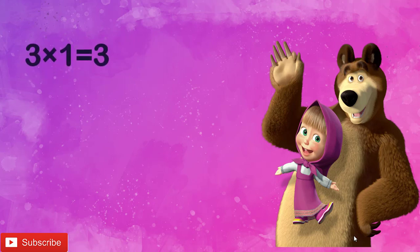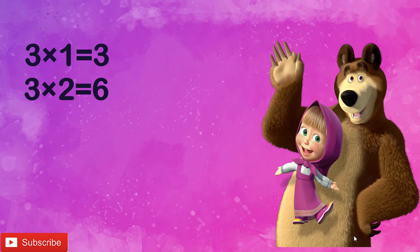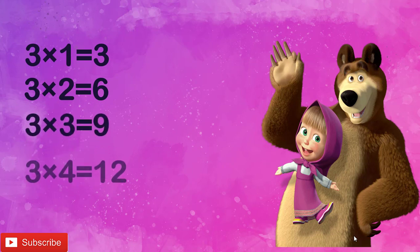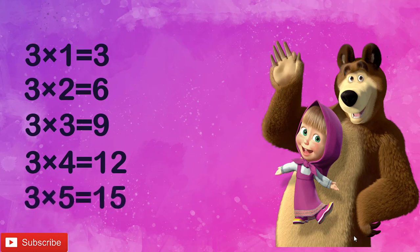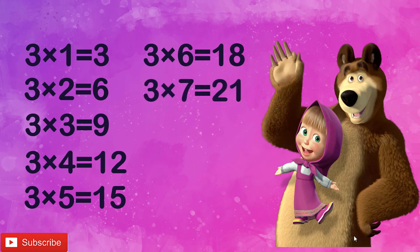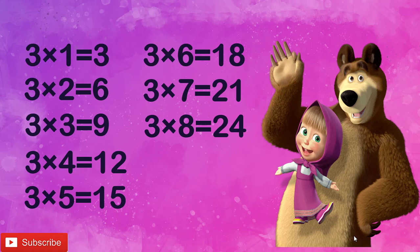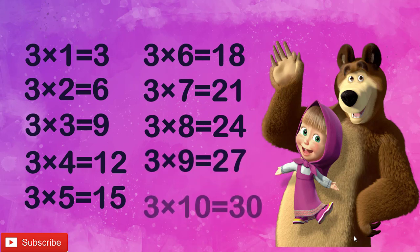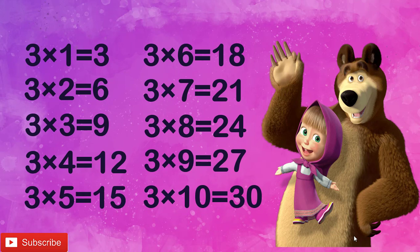3 1's are 3, 3 2's are 6, 3 3's are 9, 3 4's are 12, 3 5's are 15, 3 6's are 18, 3 7's are 21, 3 8's are 24, 3 9's are 27, 3 10's are 30.